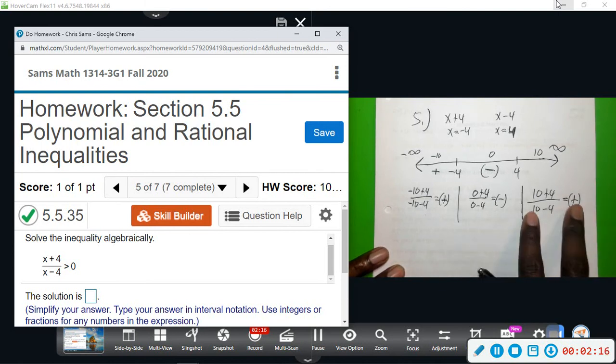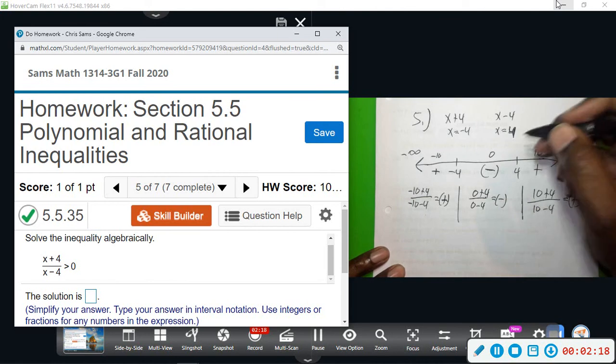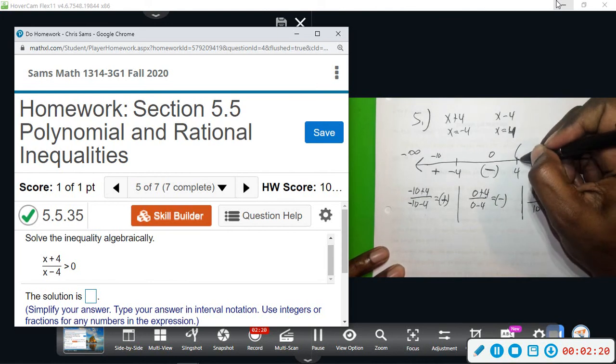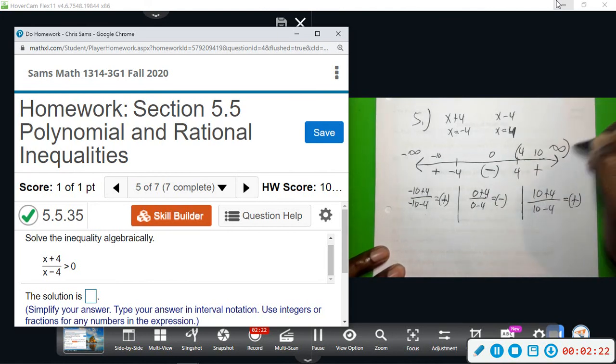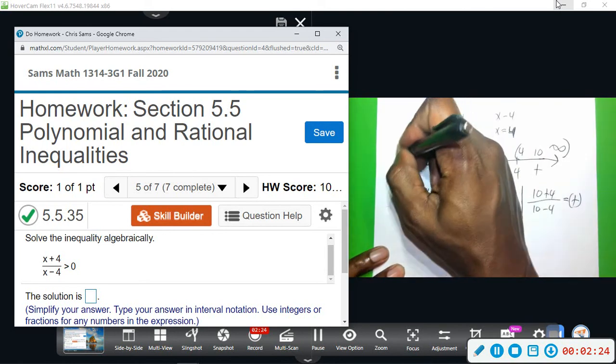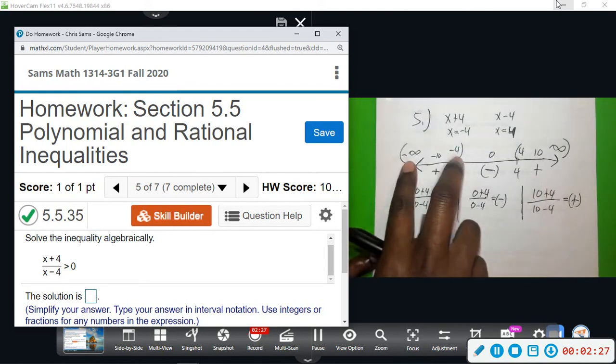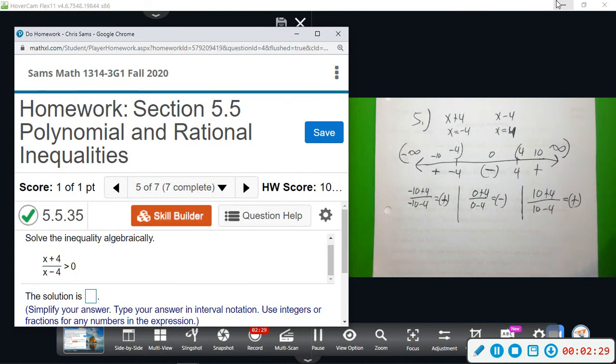Alright, so we want to know where it's greater than zero. So we want to know where it's positive. So that would be from four to infinity and from negative infinity to negative four. These are the areas where this guy is going to be positive.